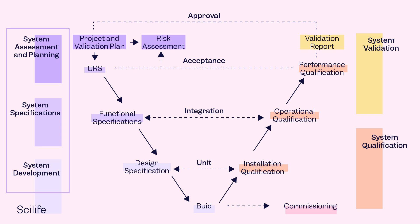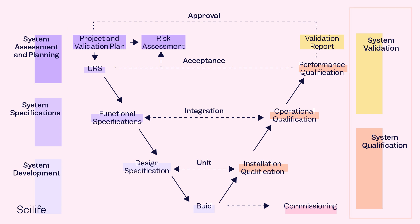Step 3: System Development. The right side of the V represents the execution of System Qualifications and System Validation: Installation Qualification, Operational Qualification, Performance Qualification.